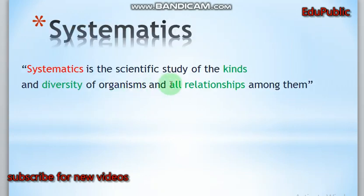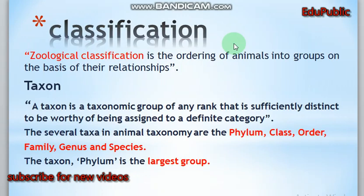Systematics is the scientific study of kinds and diversity of organisms and their relationships among them — so it covers both the kinds of organisms and diversity, and their relationships. Classification is the ordering of anything into groups. Zoological classification is the ordering of animals into groups on the basis of their relationships, whether positive or negative.